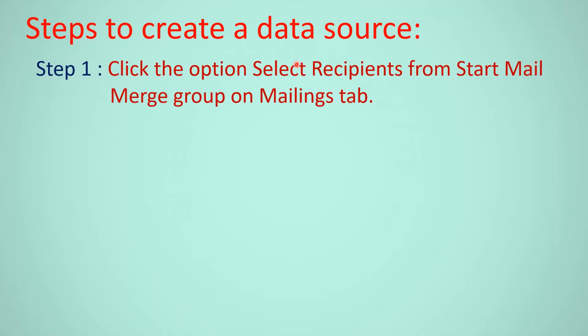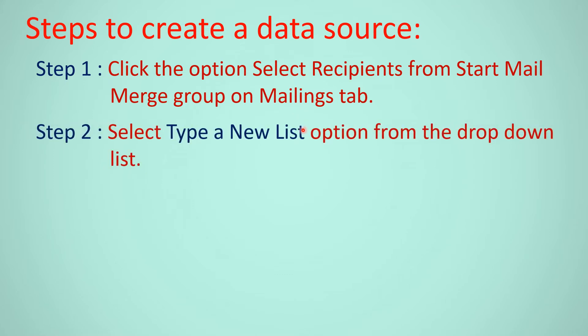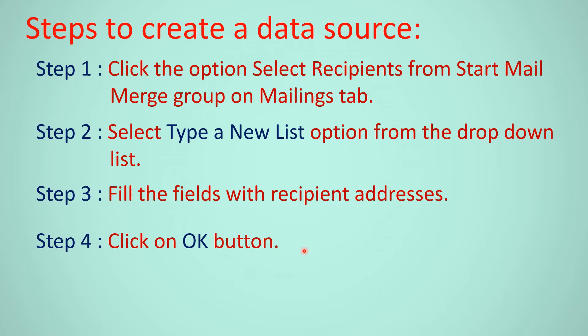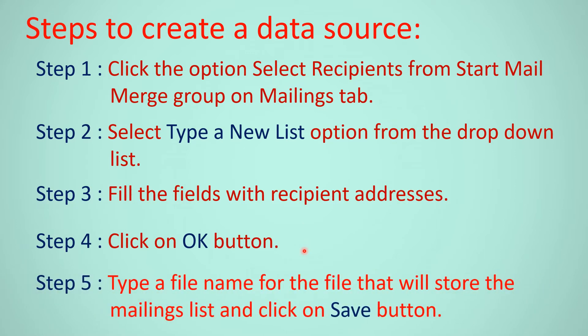To create a data source, click the Select Recipients option from the Start Mail Merge group on the Mailing tab. Select the Type a New List option from the drop-down list. Fill the fields with recipient addresses, then click on OK. Type a file name for the file that will store the mailing list and click on Save.